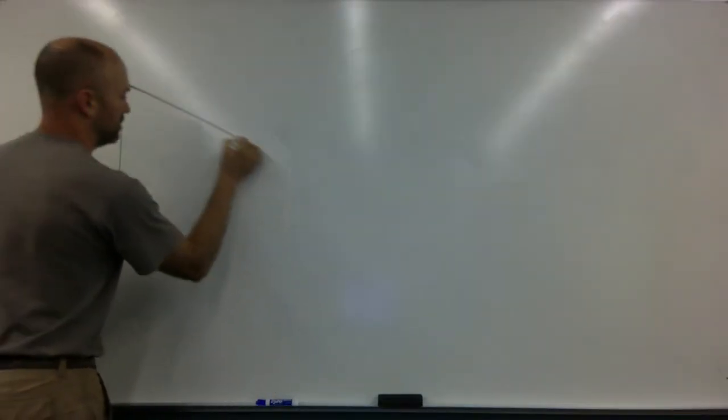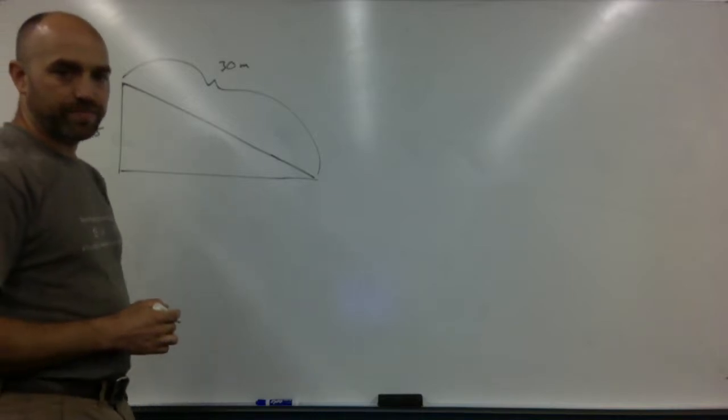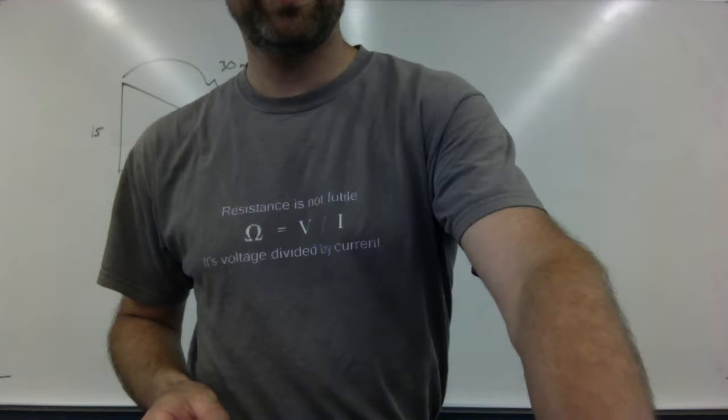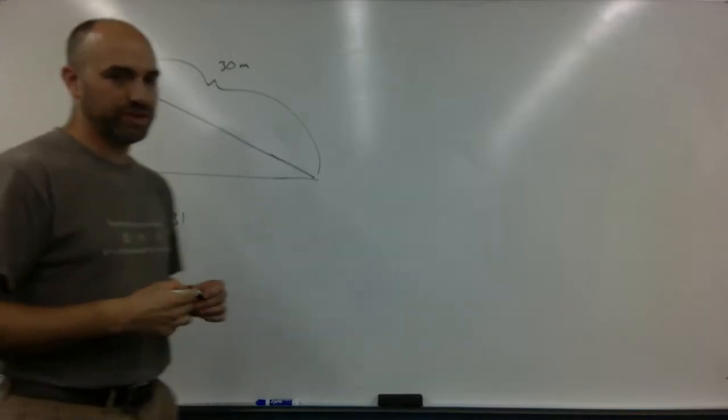And then problem six. So problem six — it tells you the ramp is 15 meters tall and 30 meters along the incline. And you place the box at the top of the ramp and wish to know the velocity at the bottom. The coefficient of friction between the box and the ramp is given. What is the final velocity? Use energy.